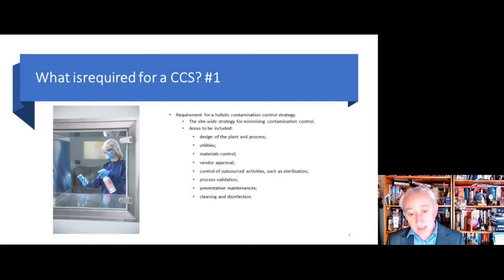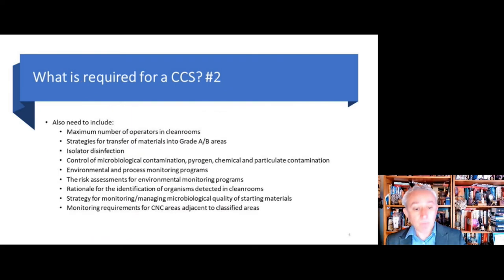So the strategy could be a single document or a series of interconnected documents developed to reflect a site-wide strategy for identifying gaps and minimizing contamination control. Areas to be included are design of the plant and process, utilities, material control, vendor approval, control of outsourced activities such as sterilization, process validation, preventative maintenance, cleaning and disinfection, with a focus on contamination and cross-contamination. To develop such a document requires good technical understanding of procedures and controls underpinned by good scientific knowledge.